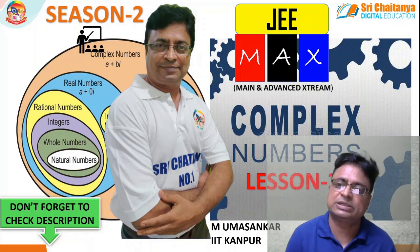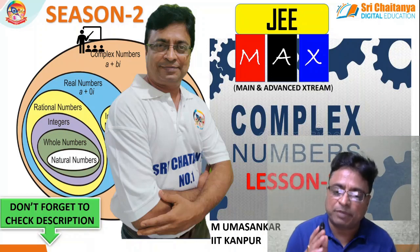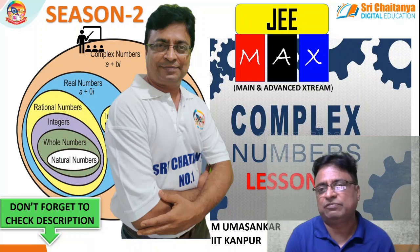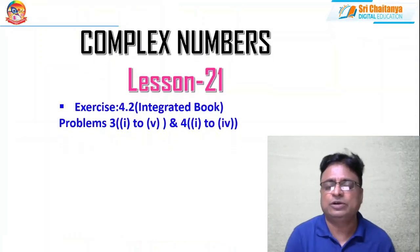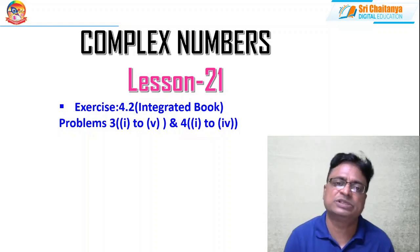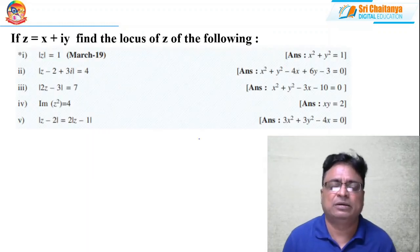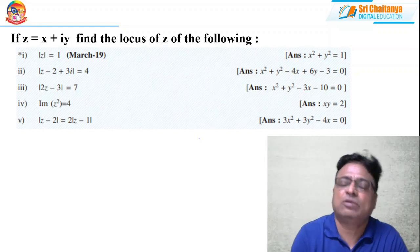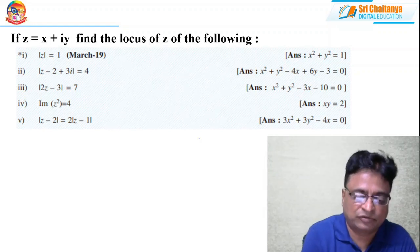Through these lessons I am concentrating on problems from the ICON Integrated Test Book. In our previous lessons I completed Exercise 4.1. Now it is Exercise 4.2. In lesson number 20 I completed Exercise 4.1 problems 1 and 2. This is about problems 3 and 4 of Exercise 4.2 of the Integrated Test Book. Now coming to the second problem: if z = x + iy, find the locus of z for the following.